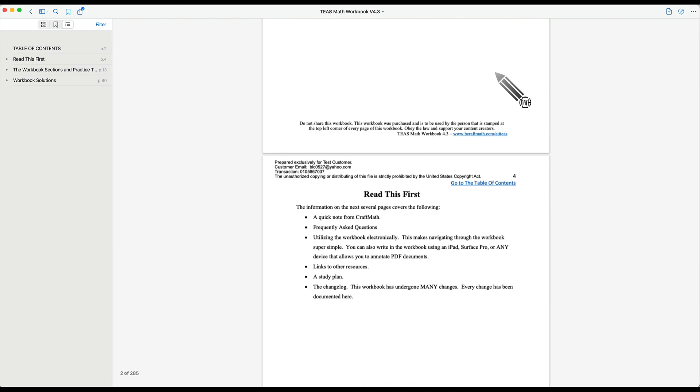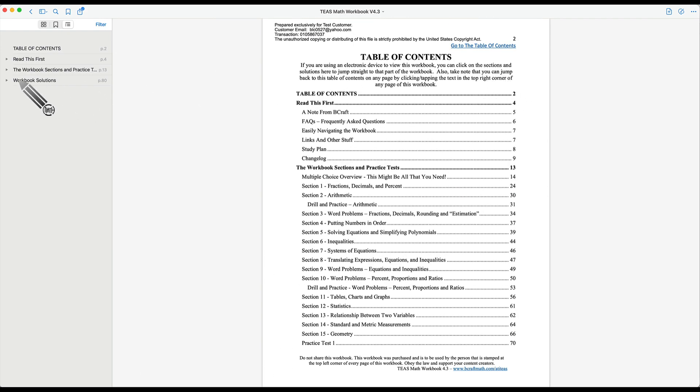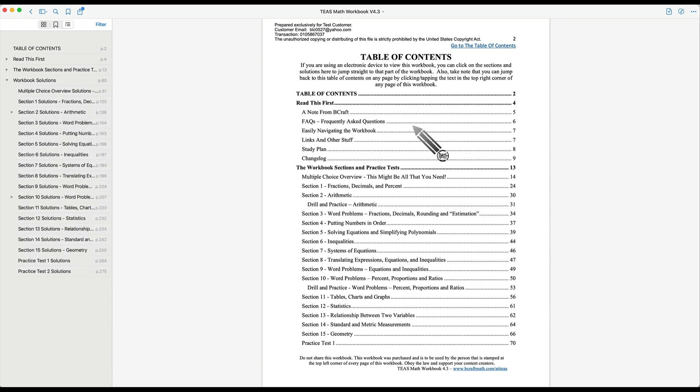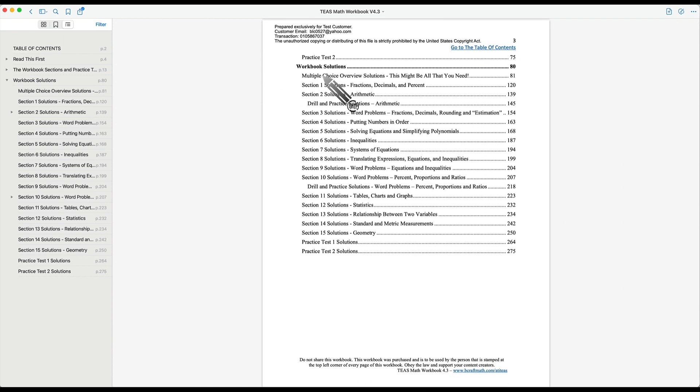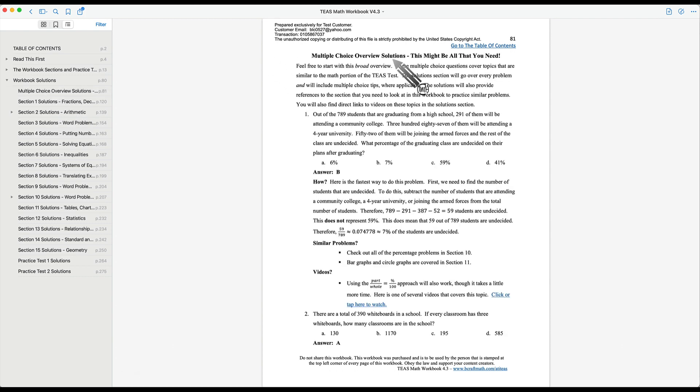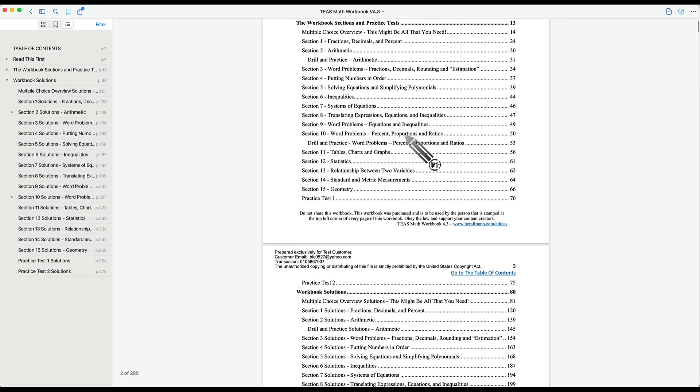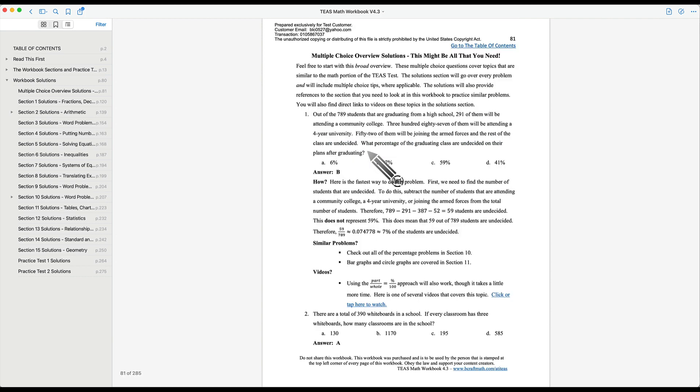Now we can navigate back to the table of contents or many PDF readers also have this sidebar where you can navigate through these documents. So I have workbook solutions, but just bear in mind that's still the table of contents and it's on this second page of the table of contents. So maybe we want to jump to the multiple choice overview solutions. Page 81, notice that matches over here as well. So tapping here will jump to that section or we can go back to the table of contents and we can actually click within the workbook and it'll still jump to that same section. So notice over here in the sidebar, there are solutions to every single section.